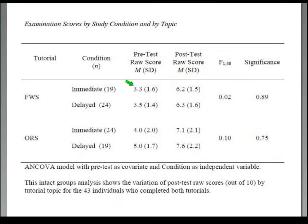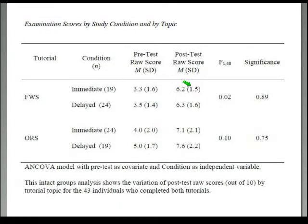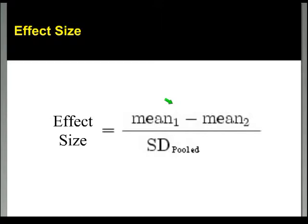You can also calculate the effect size going from pretest to post-test. People scored around 3 out of 10 on the pretest, and after doing the tutorial got 6 out of 10. To make the math easy: that's an increase of 3 points across a standard deviation of 1.5, giving an effect size of 2 — a sizable one. So the tutorial worked going from pretest to post-test, but the difference between doing it immediately versus in a delayed fashion didn't really make much difference from one condition to the other.